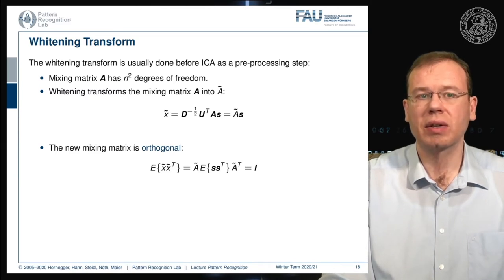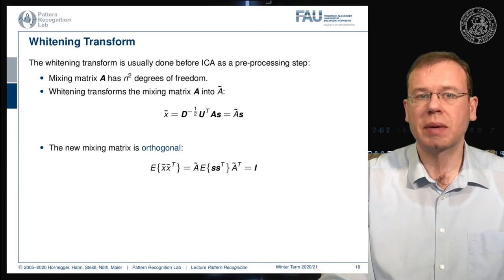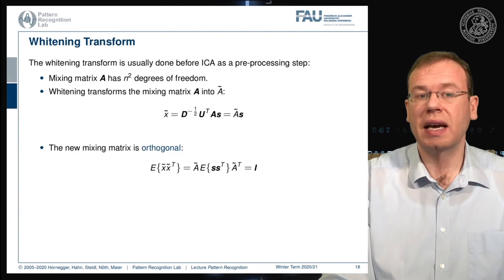The new mixing matrix A-tilde is orthogonal. We can show this by looking at the covariance of x-tilde: pulling out A-tilde and A-tilde-transpose on both sides, the expected value of the signal times its transpose is the identity matrix (since sources are independent). This gives A-tilde times A-tilde-transpose equals the identity matrix, confirming A-tilde is orthogonal.